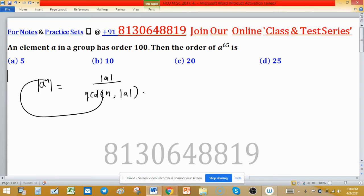For this particular question, order of a raised to the power 65 will be order of a, which is 100, divided by GCD of 65 comma 100. This will equal 100 divided by the greatest common divisor.